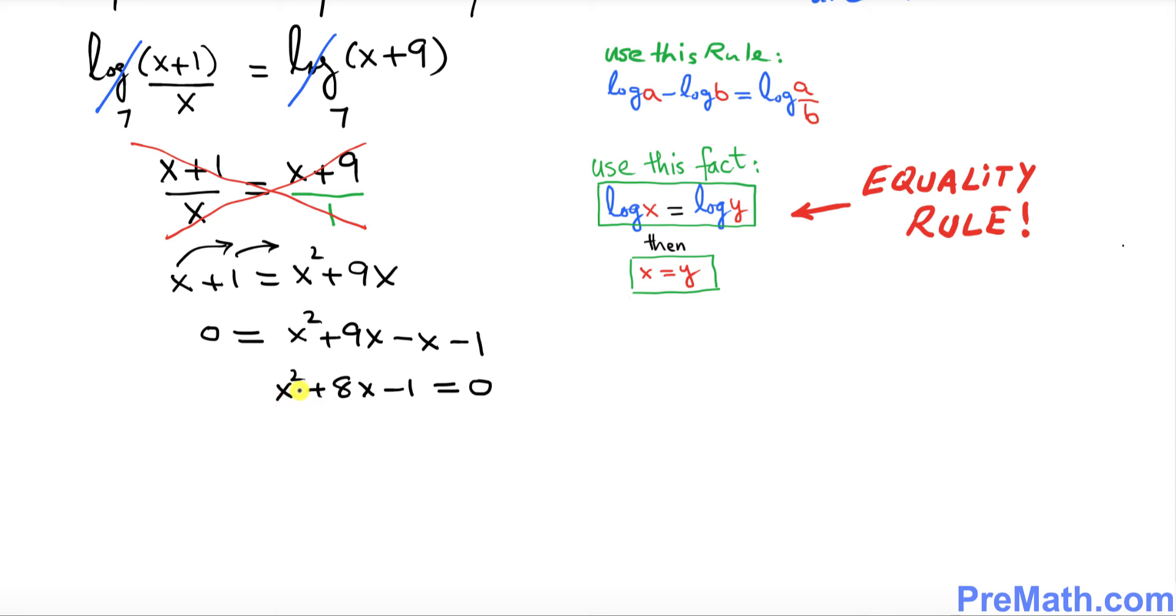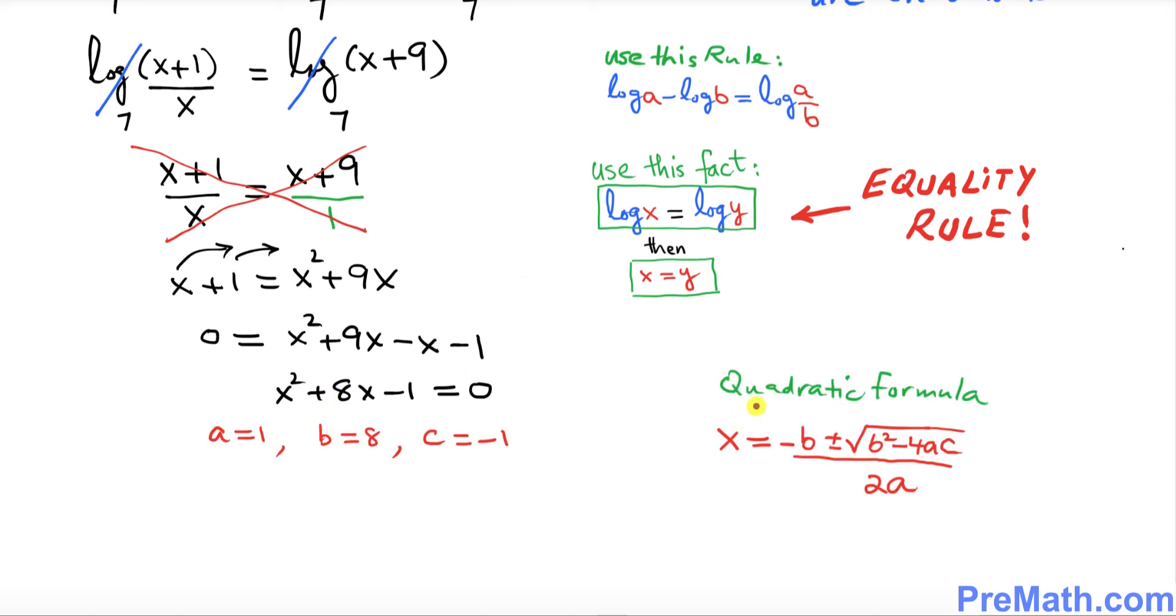This is a quadratic equation and we want to solve this by using the quadratic formula. Here's the quadratic formula that we will be using, and also I put down a, b, and c values. a is 1, b is positive 8, and c is negative 1.